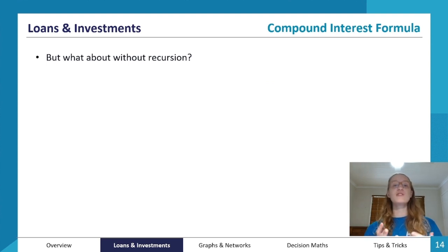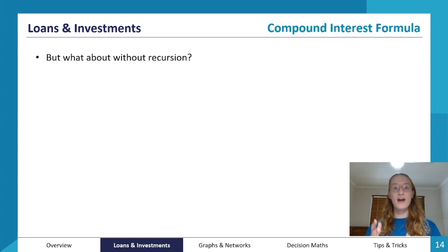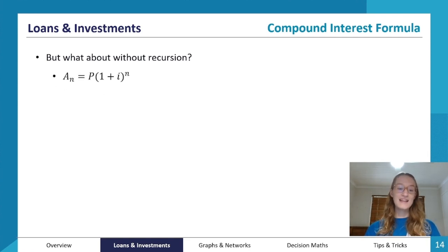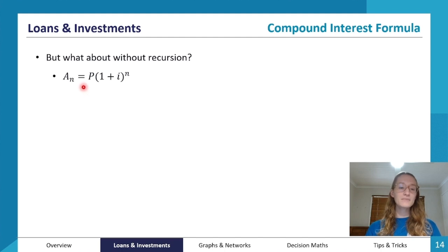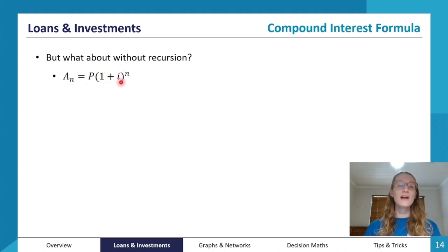Compound interest using recursion is quite time-consuming. So what if we wanted to do it without recursion? Thankfully we have a formula for that — and this is a formula that many of you are probably familiar with. A equals P times open bracket one plus i close bracket to the power of n.